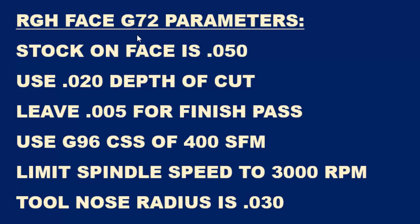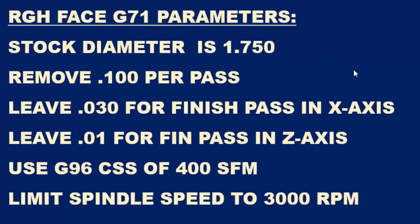Let's take a look at the G71 parameters. Here are some of the parameters to help you write the G71 canned cycle. We're going to start off with a stock diameter of 1.750 inches and remove 100 thousandths off the diameter per pass. We're going to leave 30 thousandths on the OD for a finish pass in the X axis. And we're going to leave 10 thousandths on all the faces in the Z axis. Again, you're going to be using G96 constant surface speed with 400 surface feet per minute and limit your spindle to 3000 RPM.